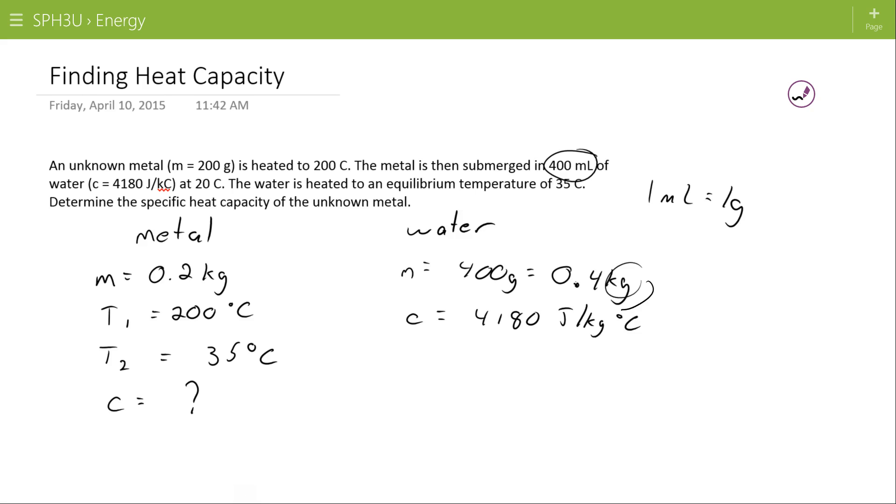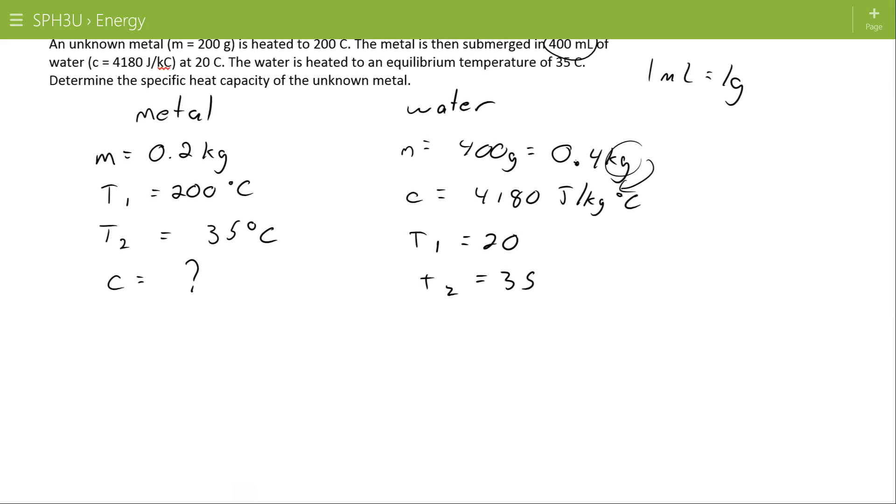We need it in kilograms because our specific heats are given in kilograms. T1 is 20 and T2 is 35. If I have my T2 and T1, I might as well calculate my delta T directly here: T2 minus T1.